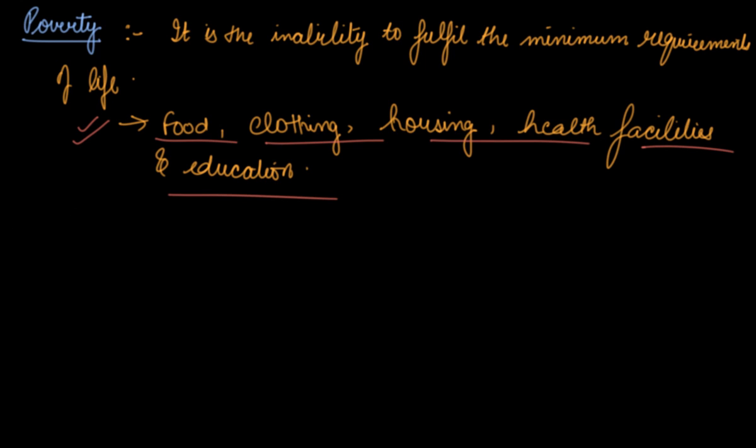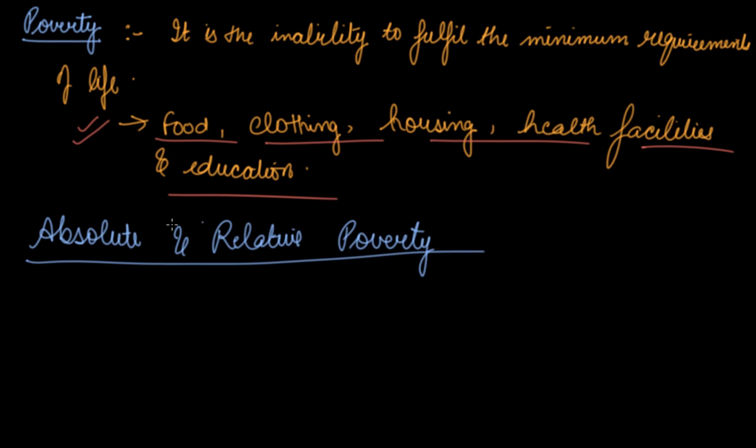Now, the question comes: what is absolute and relative poverty? This is also termed as how are the poor identified. How can you identify the poor? These are the two measures through which you can identify the poor. Number one is absolute poverty. Number two is relative poverty.